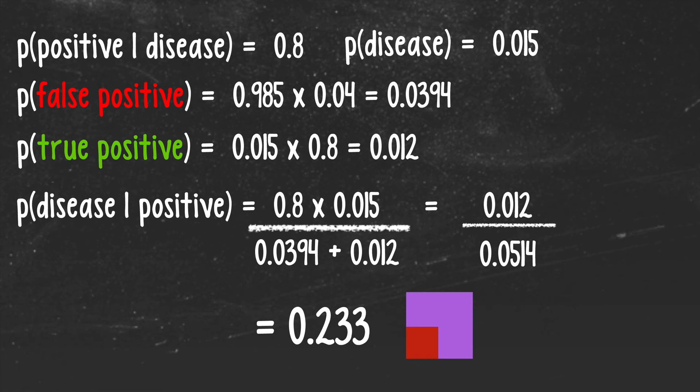So there you have it. We just used Bayes' theorem to weigh some evidence, the positive test result, to determine the likelihood of an outcome that the woman actually has ovarian cancer.